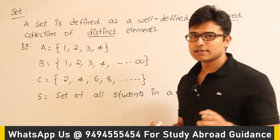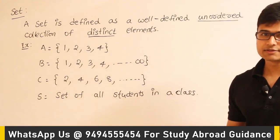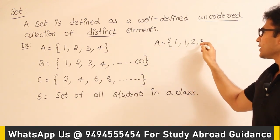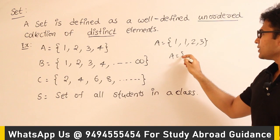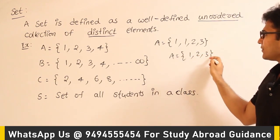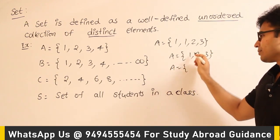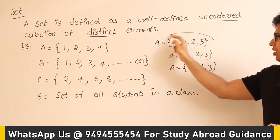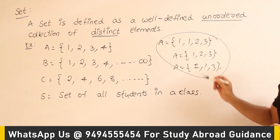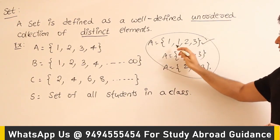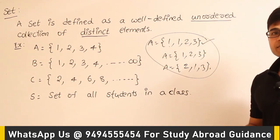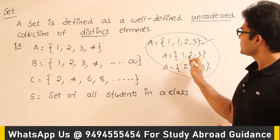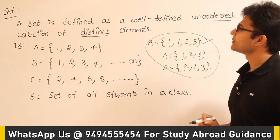Distinct elements means in a set we never have repetitions. For example, A = {1, 1, 2, 3} is the same as A = {1, 2, 3}. And even the order is not important, so A = {2, 1, 3} is also the same set. If you have repetitions, we don't consider them as two elements — just one element.